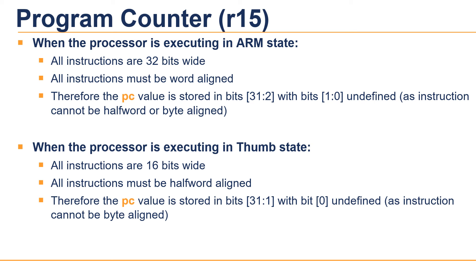Whereas if the processor is executing in Thumb state, all instructions are 16 bits wide and all instructions must be half-word aligned. Therefore, the PC value is stored in bits 31 to 1, with bit 0 undefined, as instructions cannot be byte aligned.